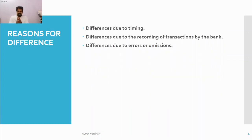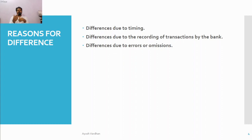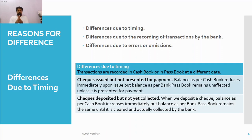Now we will see the reasons for differences. When we do reconciliation, we find some differences in the bank account or in the cash book — the final balance doesn't match a lot of the time. The first reason could be due to some timing of transactions. Another reason could be the recording of transactions by the bank — the same transactions are not being recorded at the same time. We will start with differences due to timing.